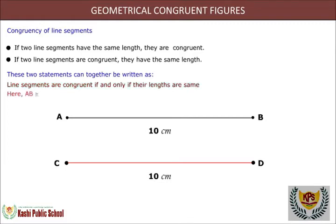Here, AB is congruent to CD, as AB is equal to CD, equal to 10 centimeters.